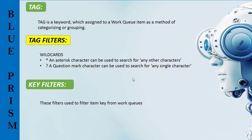Tags support two wildcards: one is an asterisk and another one is a question mark. The asterisk character can be used to search for any other characters in the tags, and the question mark character can be used to search for any single character in the items. You can also use a combination of tags in the tag filter parameter, separated by a semicolon.